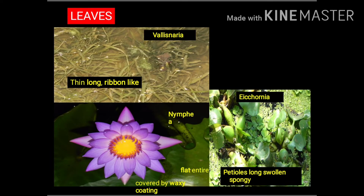The leaves are flat, entire, and covered by a wax coating. When you observe Eichhornia, the leaves show a peculiar type of petiole — the petiole is long, swollen, and spongy.